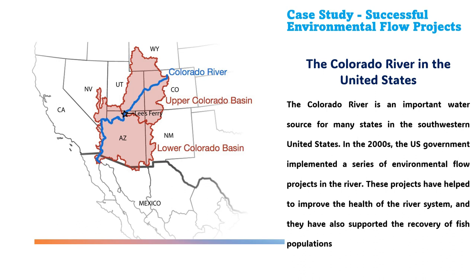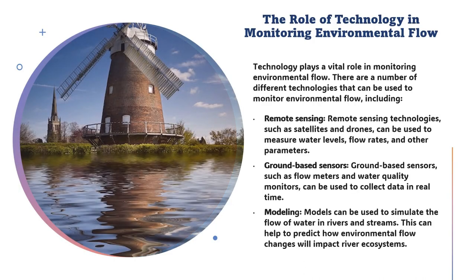Some of the key lessons that can be learned from these successful projects include the importance of stakeholder engagement — each stakeholder should be brought into the process with confidence regarding water use and conservation, including government agencies. There is also a need for sound scientific research to identify the specific needs of river ecosystems and develop effective management strategies. Environmental flow projects should be monitored and evaluated to ensure they are effective and to identify any problems and make necessary adjustments.